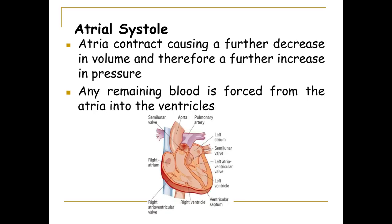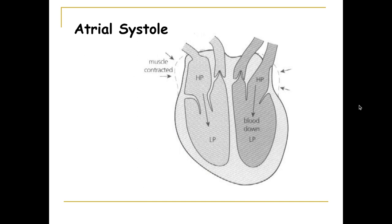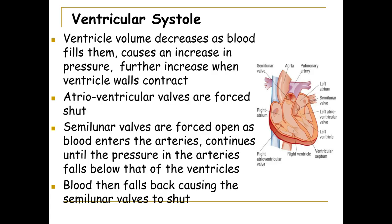Atrial systole is the next step. Due to the contraction of the cardiac muscle in the atria, this causes high pressure in the atria and therefore a lower volume. Blood is forced through the atrio-ventricular valve into the ventricles, causing the atria to empty as blood is pushed through into the ventricles.